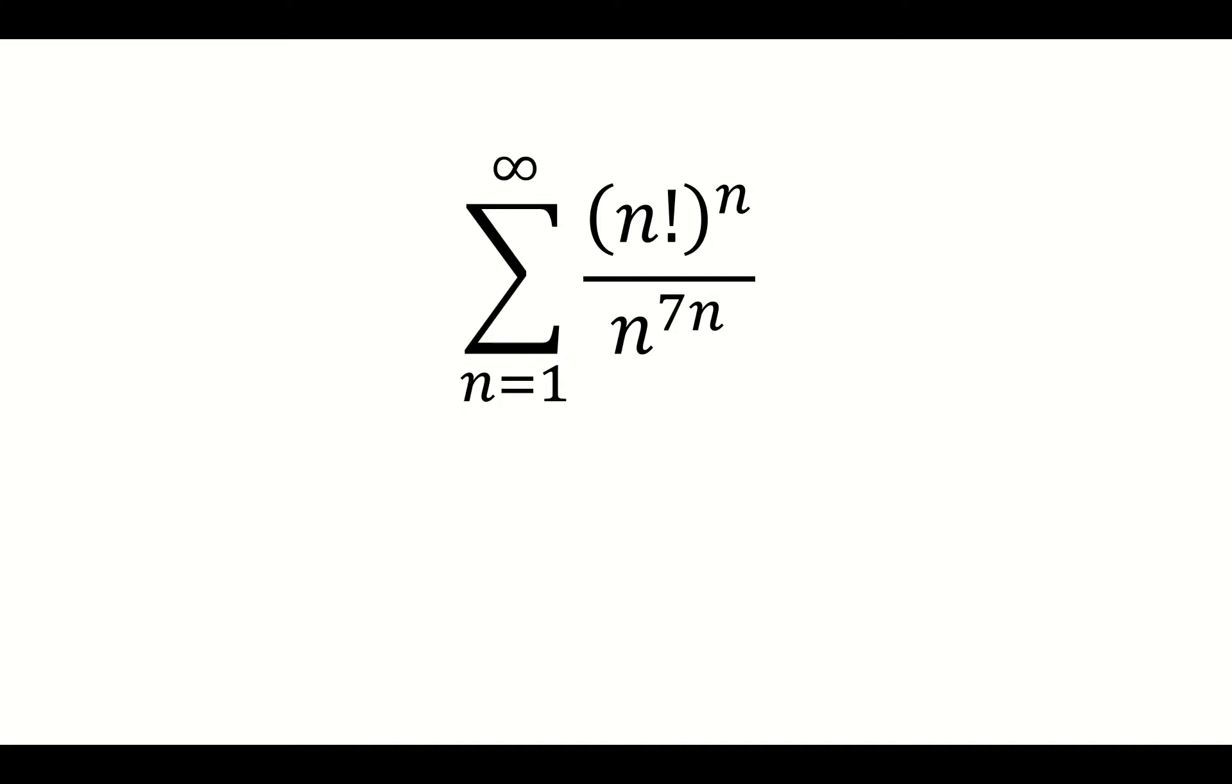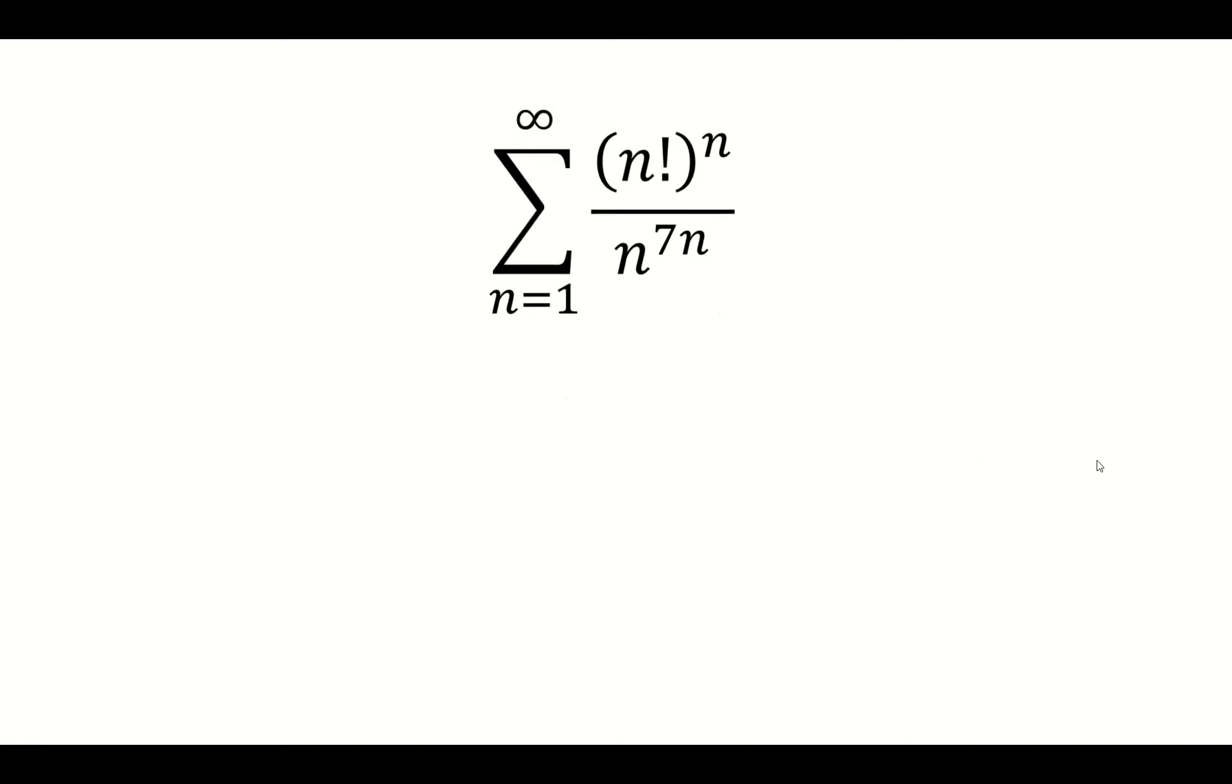We want to see whether the sum from n equals 1 to infinity of n factorial raised to the nth power over n to the 7th power converges or diverges.